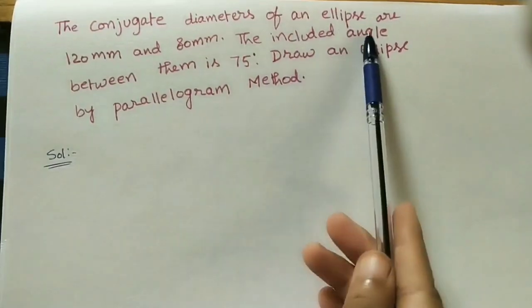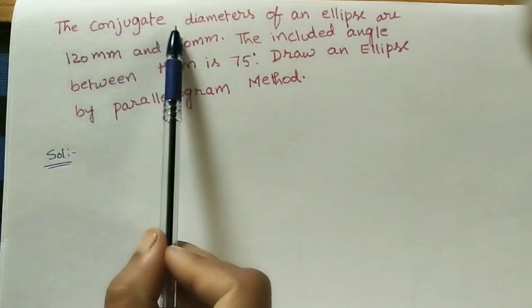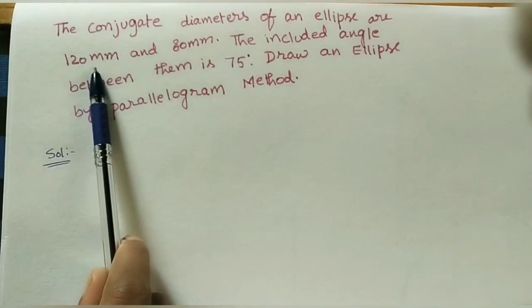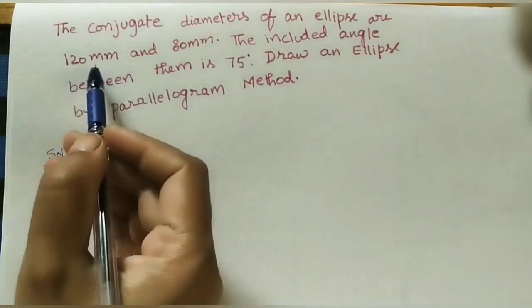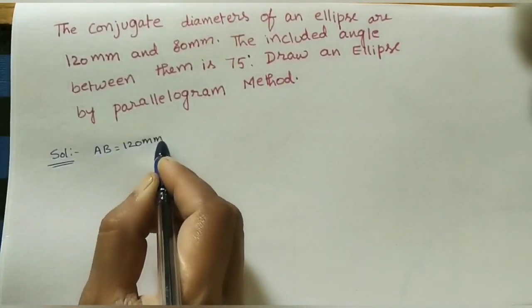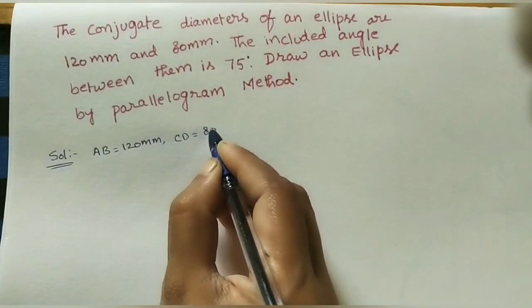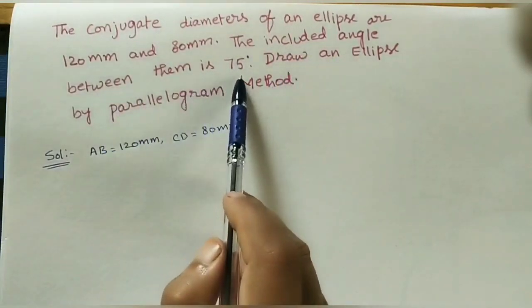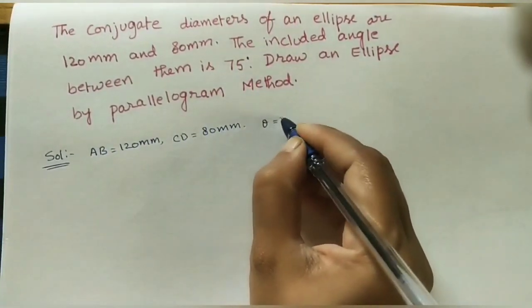Let us discuss how to draw an ellipse by using the parallelogram method. Take the textbook data. The conjugate diameters of an ellipse are 120 mm and 80 mm. AB is 120 mm, which is the major axis length of the ellipse, and CD is 80 mm, which is the minor axis length. The included angle between them is 75 degrees.